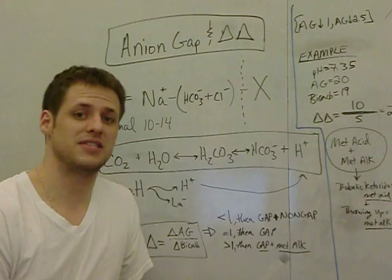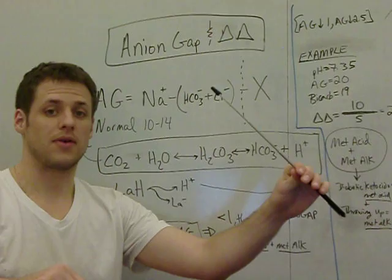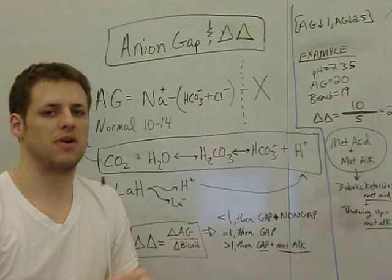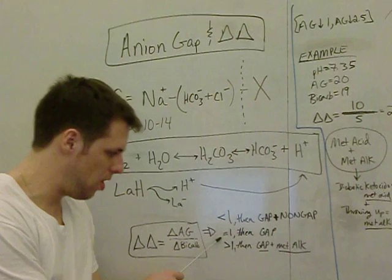Now how would that make any sense? The only way that would make sense is if you had something driving your bicarb down, the gap acidosis, and then you had something else driving the bicarb back up. And a good example would be a metabolic alkalosis. Remember, osis refers to the process. So you can have a metabolic acidosis with a metabolic alkalosis at the same time.